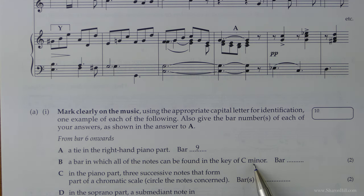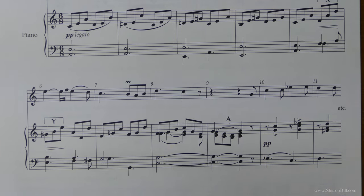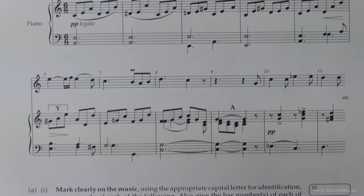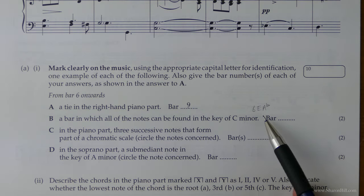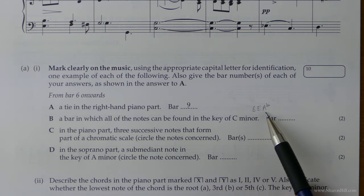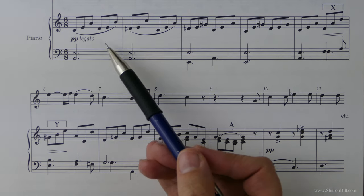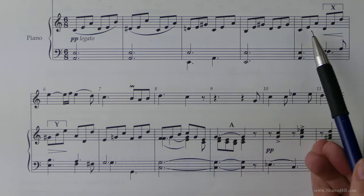So then, we need to now look for a bar in which all of the notes in that bar can be found in the key of C minor. This is question B. So we need to just bear in mind what would we be looking for. So C minor has a key signature of B flats, E flats, and A flats. So we need to be looking for some additional flat signs because at the moment we have a key signature of nothing. So let's just look for some additional flat signs that we can't quite account for. So sharp signs won't do because they aren't part of C minor.